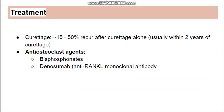Treatment includes surgical curettage, where the tumor is locally removed. However, recurrence is very common, occurring in approximately 15 to 50% of cases after curettage. Anti-osteoclast agents such as bisphosphonates can be used, as well as anti-RANK ligand monoclonal antibody, which targets the marker expressed by the neoplastic cells.